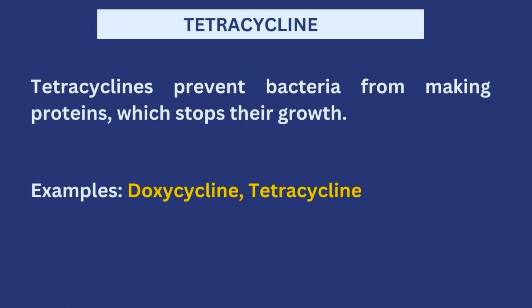Tetracyclines work very similarly to macrolides — they also prevent bacteria from making proteins and stop their growth. Very common examples of tetracyclines are doxycycline and tetracycline. A memory trick: doxycycline comes in a green capsule, and tetracycline in a red and yellow one — think traffic lights: red, yellow, and green. These are the colors associated with the tetracycline class.